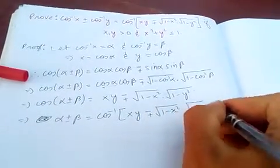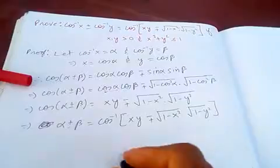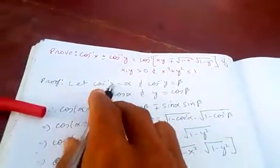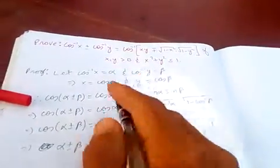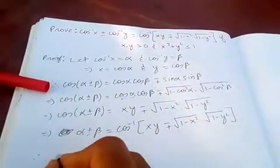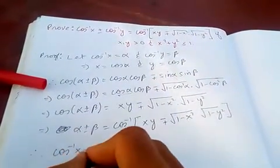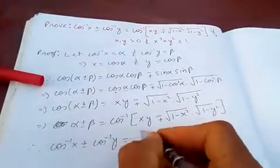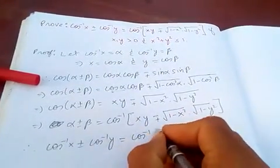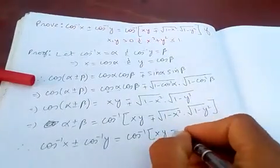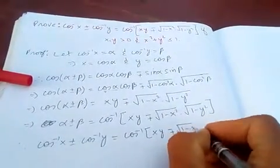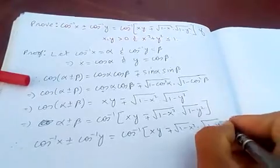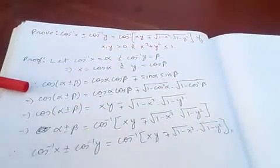Therefore, cos⁻¹(x) ± cos⁻¹(y) = cos⁻¹(xy ∓ √(1 − x²)·√(1 − y²)). Hence proved.